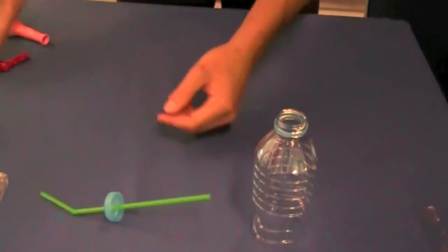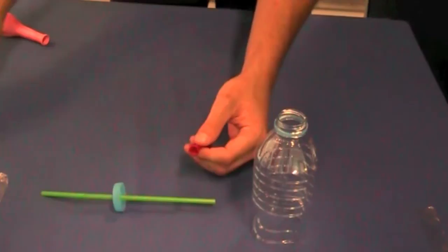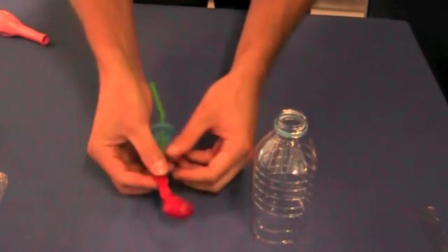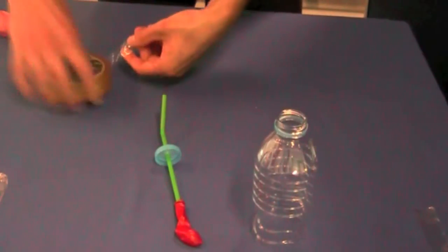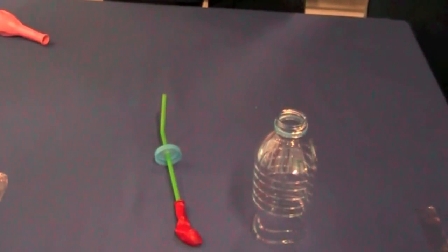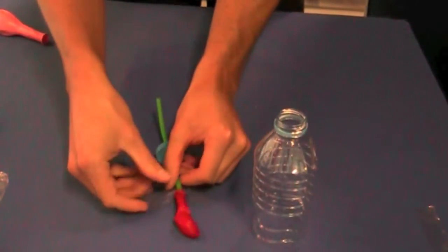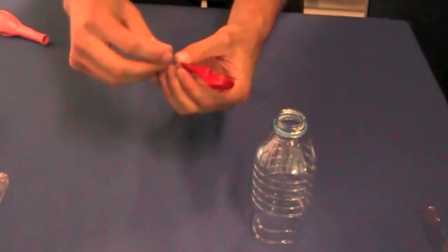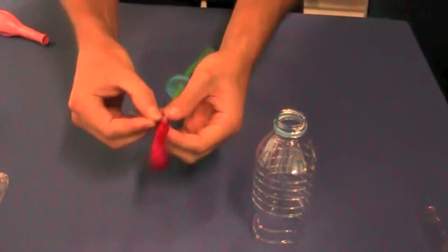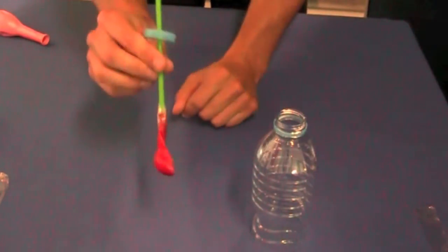The next step is to take our red balloon, or the small balloon, which is going to be our lung, and tape it onto the end of the straw. We're doing this so that it's airtight. And that's us more than halfway there already.